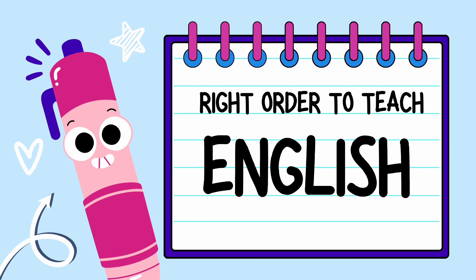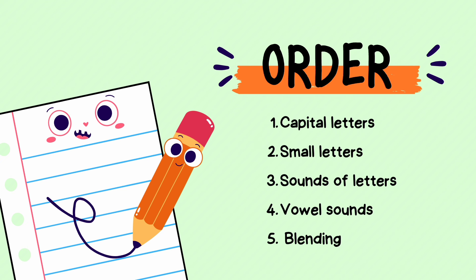Start with the order I have given: capital letters, followed by small letters, sounds of letters, vowel sounds, and finally blending. After blending there are more things to cover, but since this is the first video, let's keep everything simple and stick to these five things.